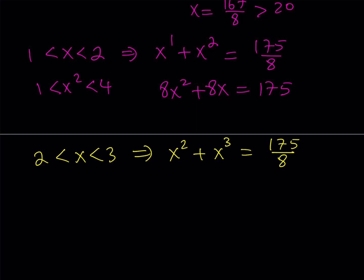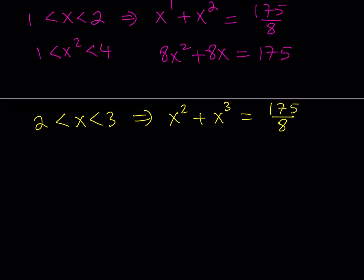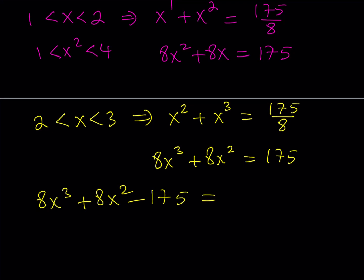We're going to solve this problem in a really nice way. I think the solution of this equation is interesting. Okay, now, I'm going to go ahead and cross multiply first. So I should get 8x cubed plus 8x squared equals 175. And then let's put everything on the same side and put it here, 8x cubed plus 8x squared minus 175 equals zero.